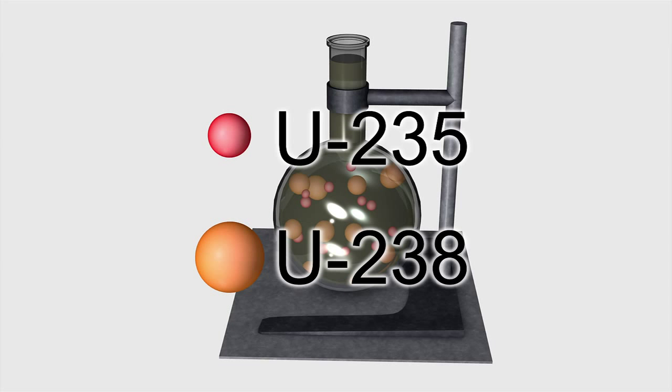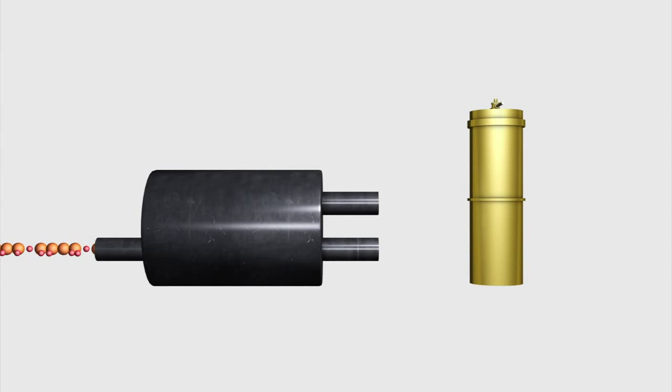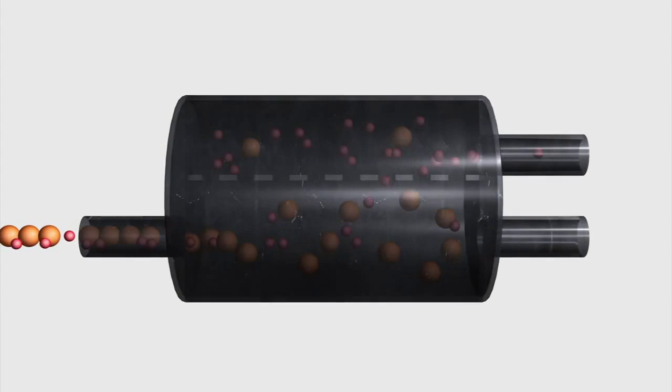Uranium hexafluoride can be enriched by diffusion. The gas is pumped through a high pressure feed stream into a low pressure chamber fitted with a porous membrane.